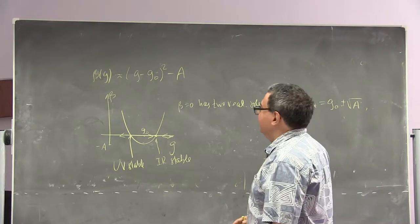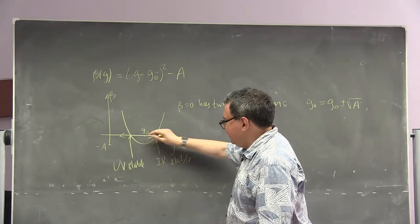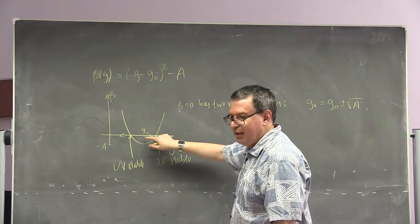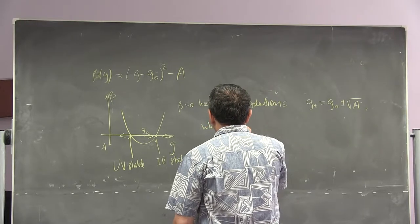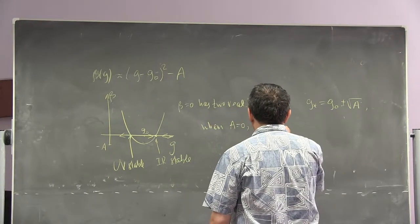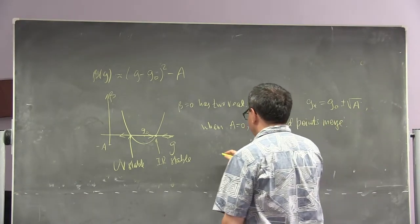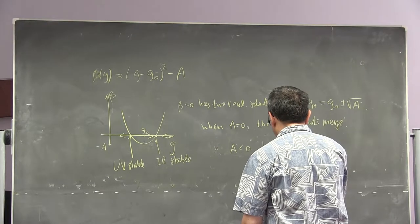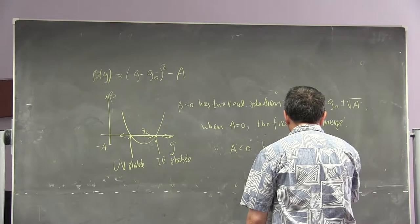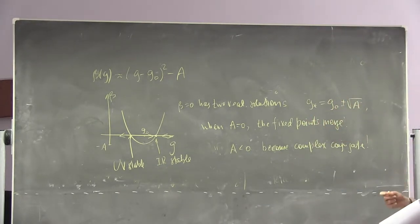Now imagine varying the parameter a, reducing it until it changes sign. As you reduce a, the two intersections get closer and closer, then collapse to g₀. When a equals zero, the fixed points have merged. When a is less than zero, they become complex conjugates. The two physical fixed points have merged and disappeared, going into the complex plane.